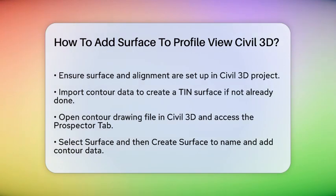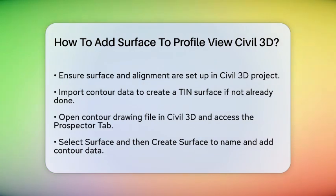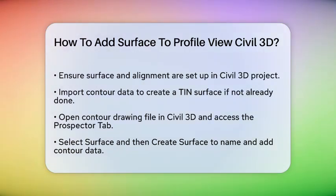First, ensure you have your surface and alignment already set up in your Civil 3D project. If you haven't created your surface yet, you'll need to import your contour data and create a TIN — triangulated irregular network — surface.